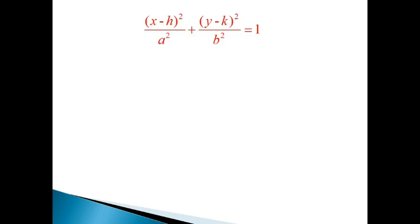Here's the equation of an ellipse. If a were equal to b, this would be the equation of a circle, because the radius of the major axis and minor axis would be the same. Since a is not going to equal b, some textbooks call a the major axis. For this video, a will always be with the x value and b with the y value, and the greater of the two will be the major axis.